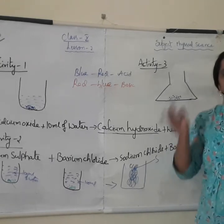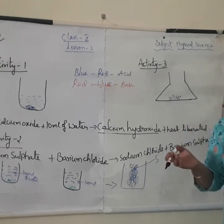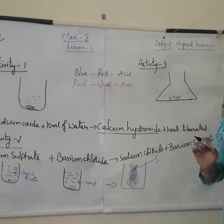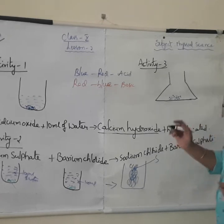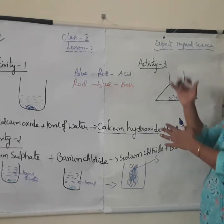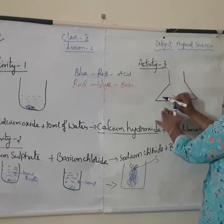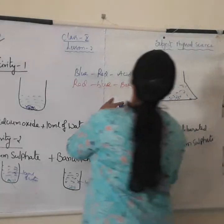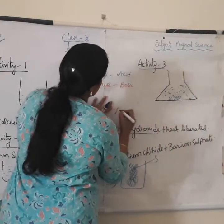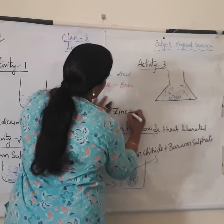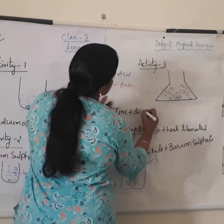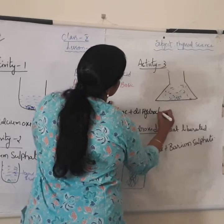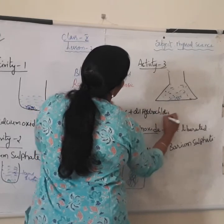We have solutions of two types: dilute and concentrated. Now, to the zinc granules you must add dilute hydrochloric acid — pour it through the thistle funnel. So the substances we have taken are zinc plus dilute hydrochloric acid.